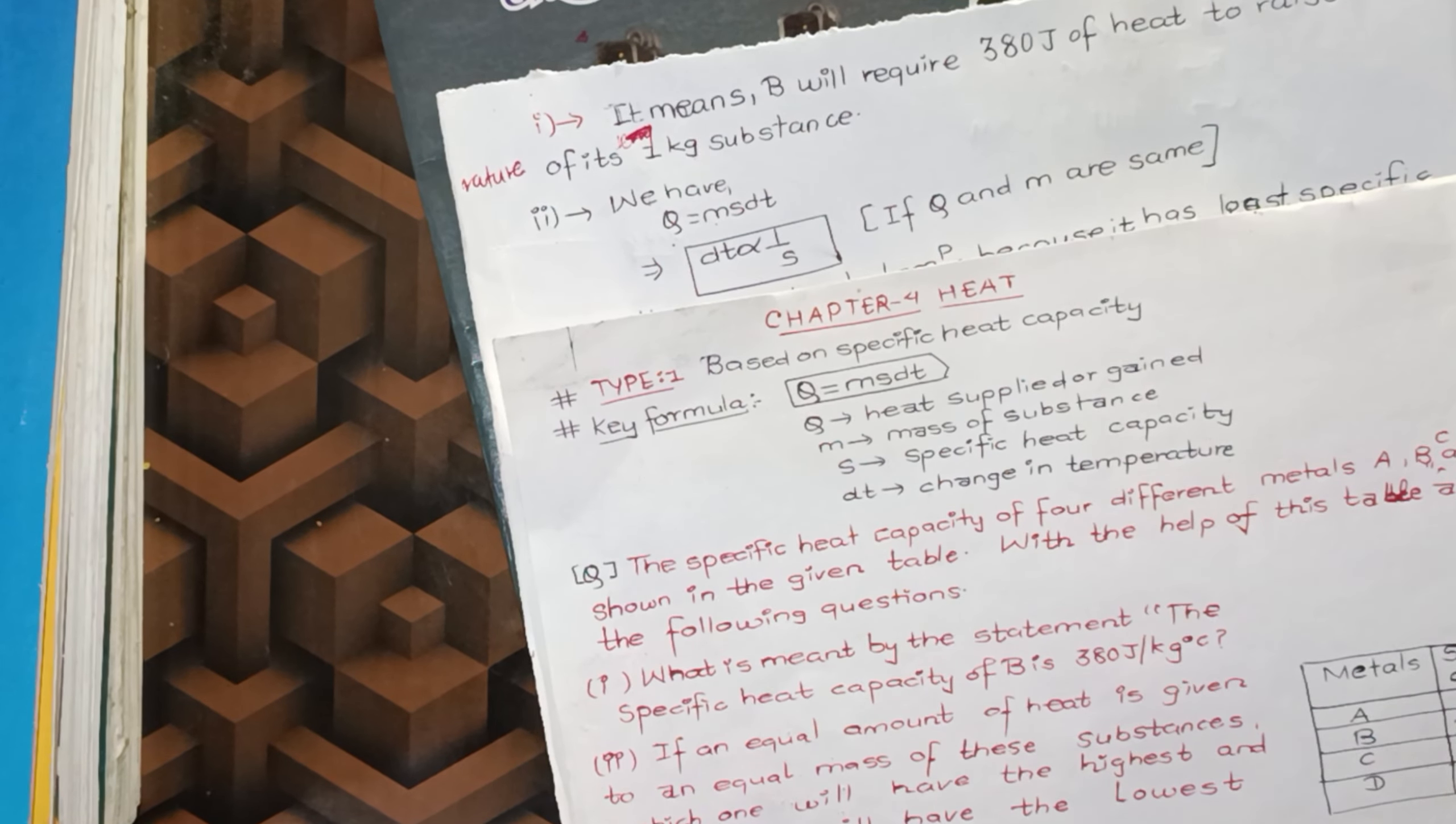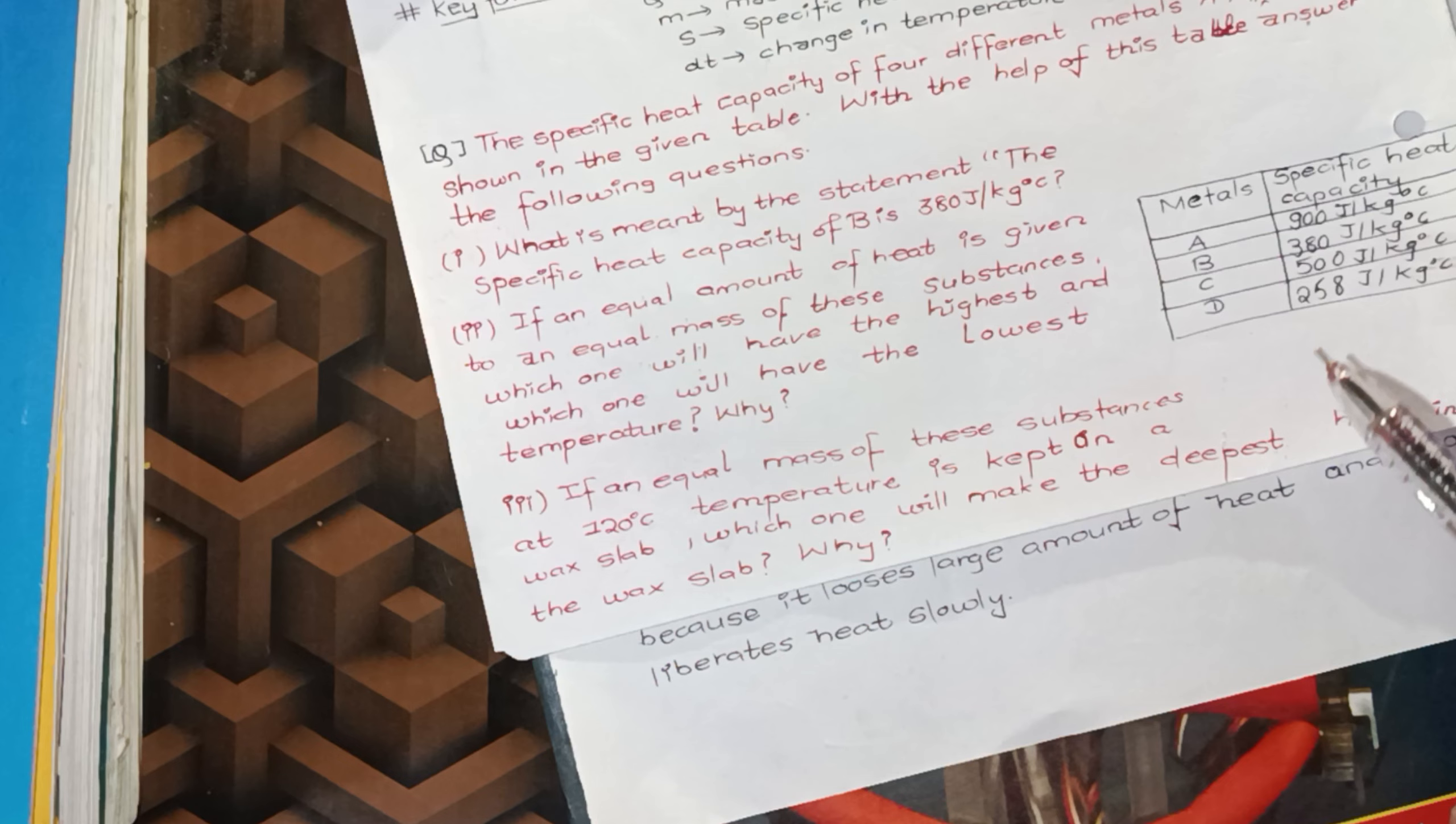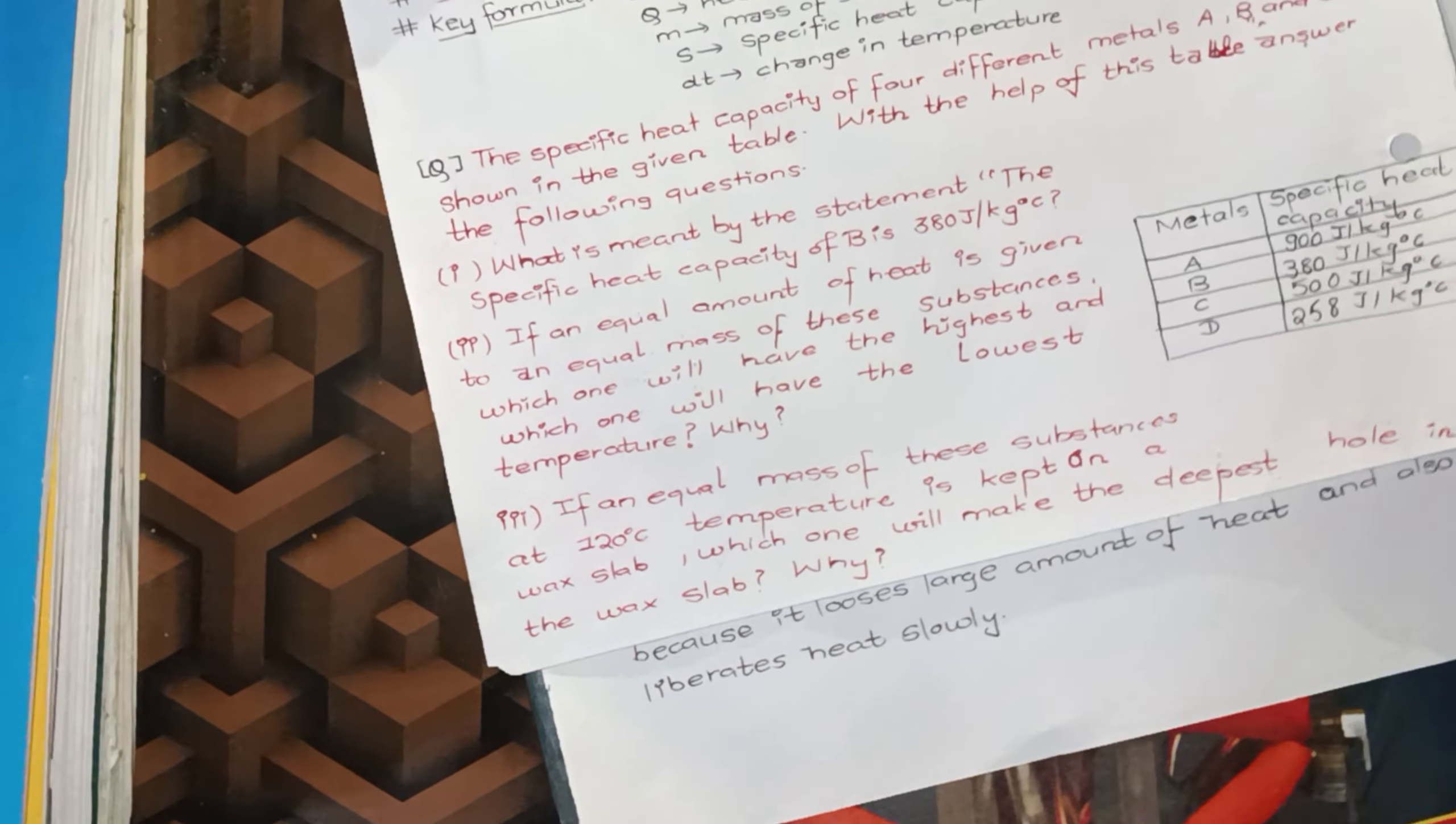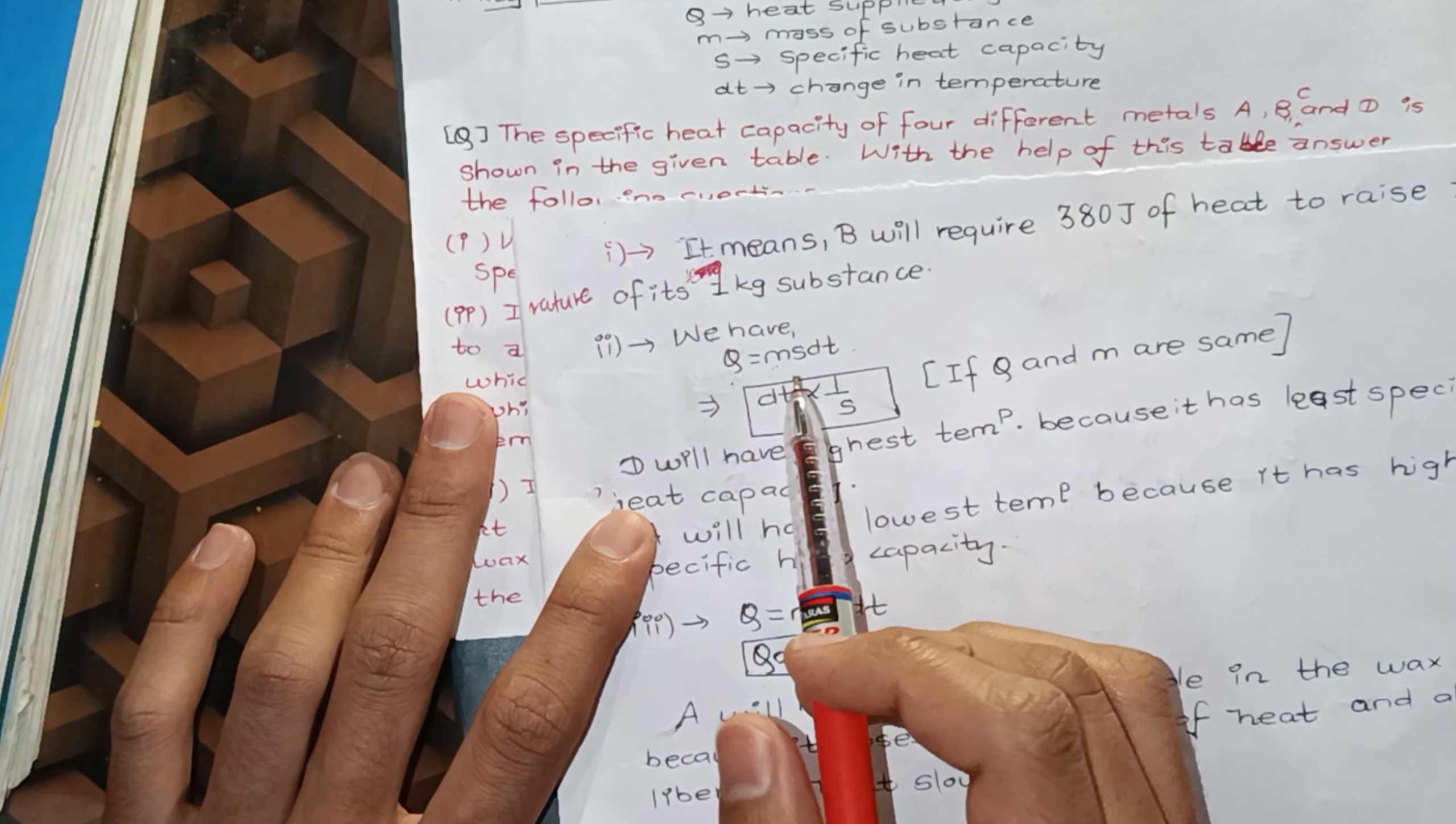Then the other question is, if an equal amount of heat is given to an equal mass of these substances, we will have some at least at a low temperature and some at the higher temperature. So we have this relationship: Q is equal to MSDT. Therefore, the mass is the same, heat is the same.